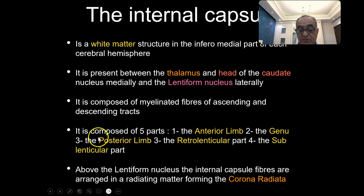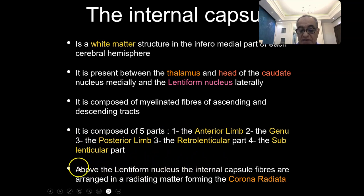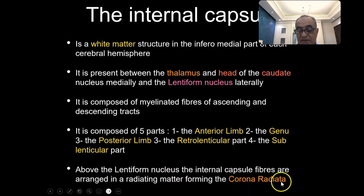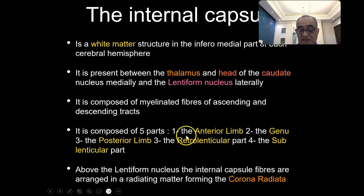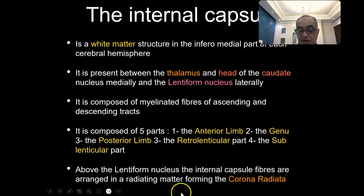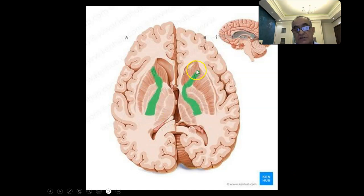The fibers going to or coming from the cortex, after leaving the internal capsule, radiate and disperse to reach different parts of the cerebral hemispheres, forming the corona radiata — like a radiating crown. So the fibers are compact and compressed in the internal capsule, and when they leave, they disperse to reach different parts of the cerebral cortex, forming the corona radiata.